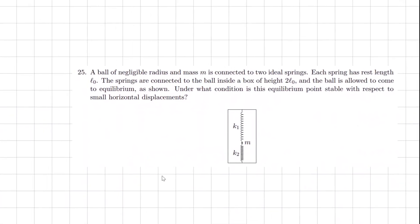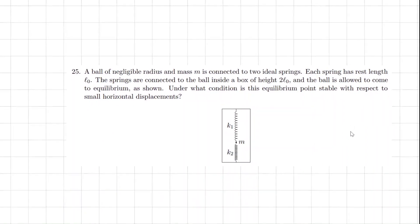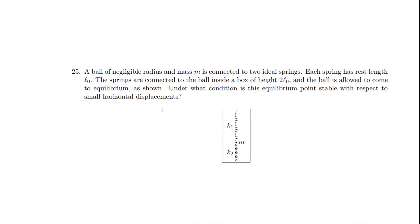I chose these problems because I found them interesting — there are quite difficult problems in the first 10 as well, but I found these more interesting. In problem 25: a ball of negligible radius and mass m is connected to two ideal springs, each with natural length L0. The springs are connected to the ball inside a box of length 2L0, and the ball is allowed to come to equilibrium. Under what condition is the equilibrium stable with respect to small horizontal displacements? The method: consider the mass when it's displaced horizontally slightly, and you want the restoring force to always point back towards the center.